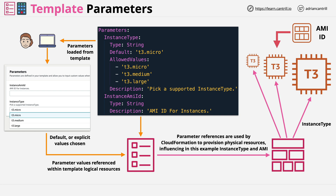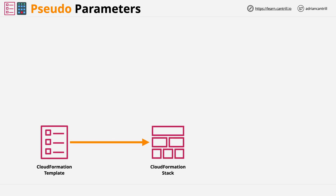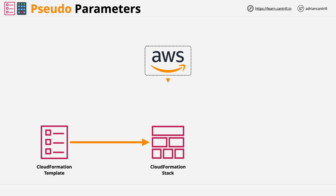Most of this applies to both template and pseudo parameters. The thing unique to template parameters is that a person or process provides the values into CloudFormation, either explicitly or by implicitly accepting the defaults. Pseudo parameters can be treated in the same way, but they're provided by AWS. A CloudFormation template is used to create a CloudFormation stack, and template and pseudo parameters can be used in a complementary way. With pseudo parameters, AWS makes available parameters which can be referenced, and these exist even if you don't define them in the parameters section of the template — think of them as being injected by AWS into the template and stack.